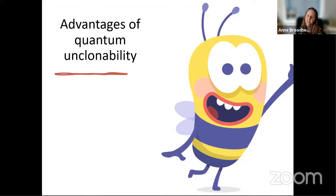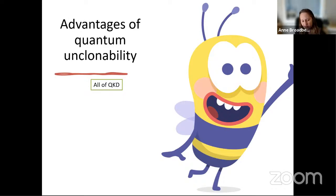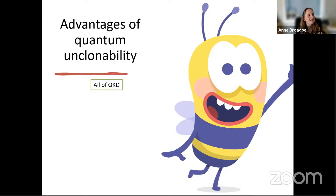That was the overview of the challenges, and now I want to go to the advantages of quantum unclonability. All of quantum key distribution — informally, we always say that because of no-cloning it's not possible for the eavesdropper to keep a copy of the communication channel and therefore she can be detected. That's the informal reason why quantum key distribution is secure. It's thanks to no-cloning that we have the vast majority of talks at QCrypt.